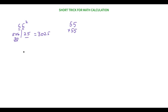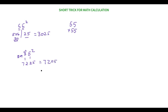Let's do another example: 85 square. First, five square is 25. Then take eight and its consecutive number nine, so eight times nine is 72. Our final answer is 7225. This could have taken at least five minutes by hand, but with this trick you can find the answer within seconds.